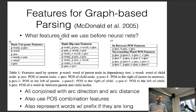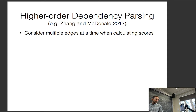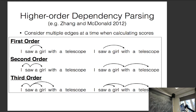Before neural networks became standard, people worked hard on higher-order dependency parsing. Higher-order dependency parsing looks at edge combinations — pairs of edges, three edges, or four edges. First order scores 'saw girl', second order considers 'I saw girl' or 'saw with telescope', and third order would be 'saw girl with telescope'. These capture combinations of words being put together, and many of these really make sense — knowing the class of things people see with telescopes would be a very indicative feature.